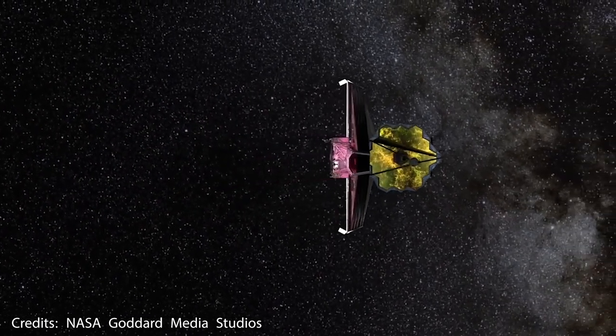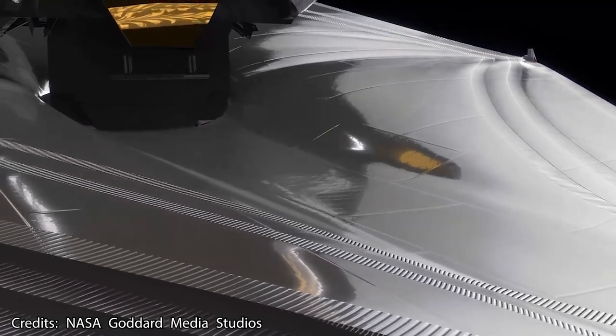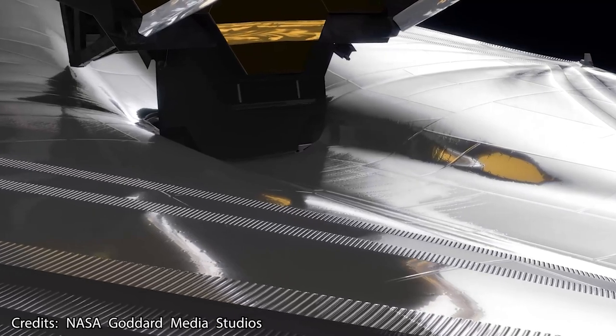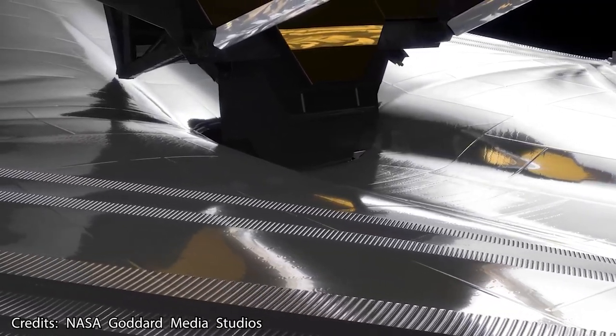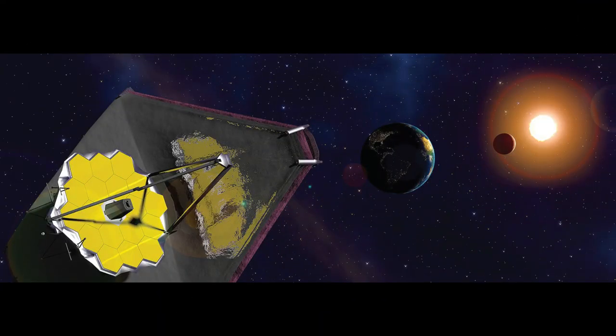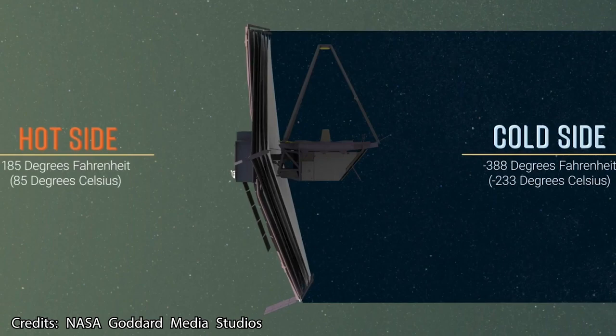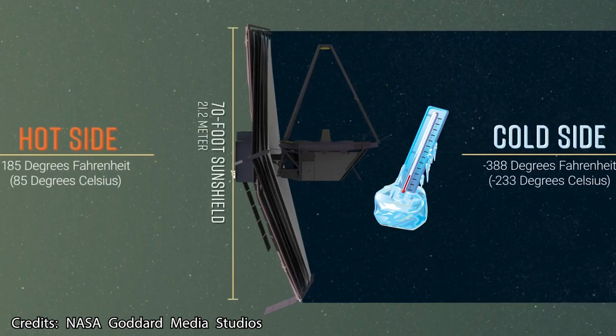However, these chilling temperatures alone wouldn't be enough without the help of a key feature aboard the James Webb Space Telescope, more specifically its gigantic heat shield, which is the size of a tennis court, and is capable of shielding off all the heat coming mostly from the sun and the earth, thus allowing the science instruments to cool down passively just by virtue of design.